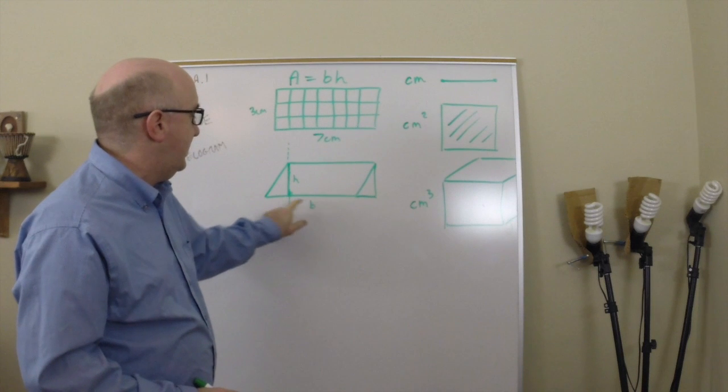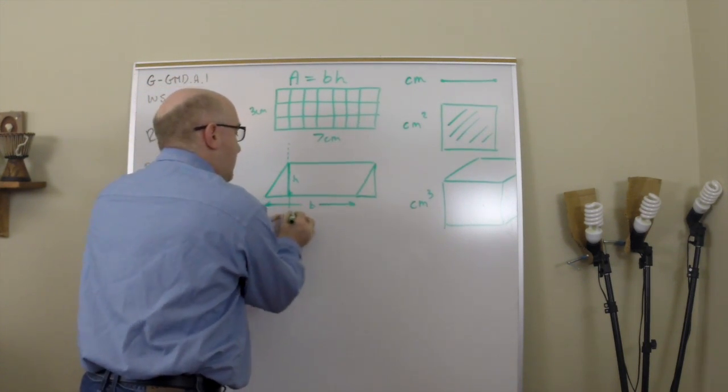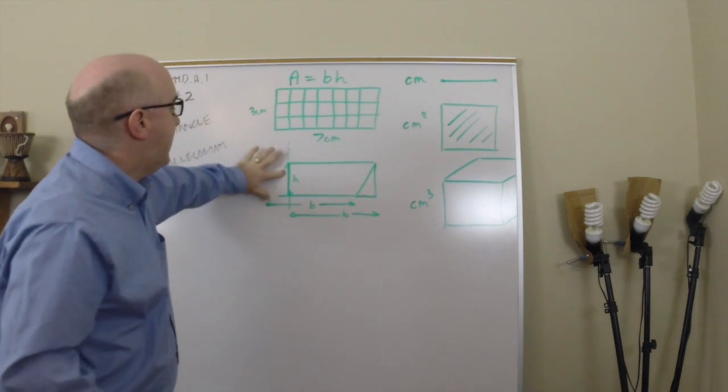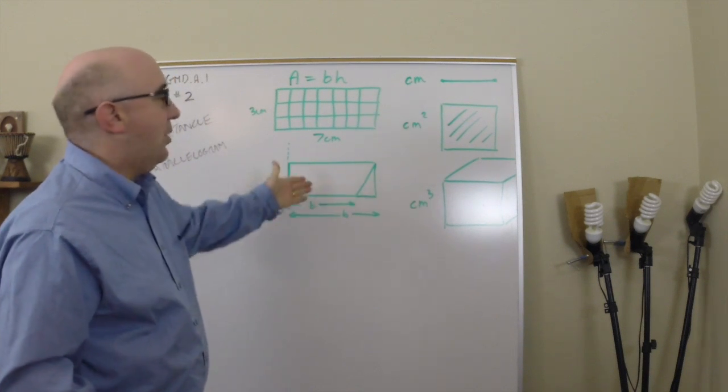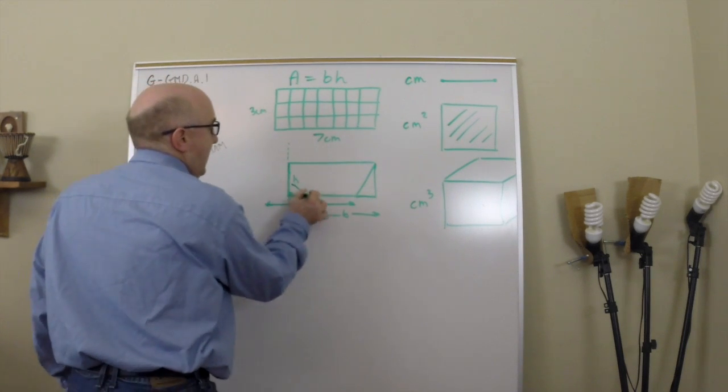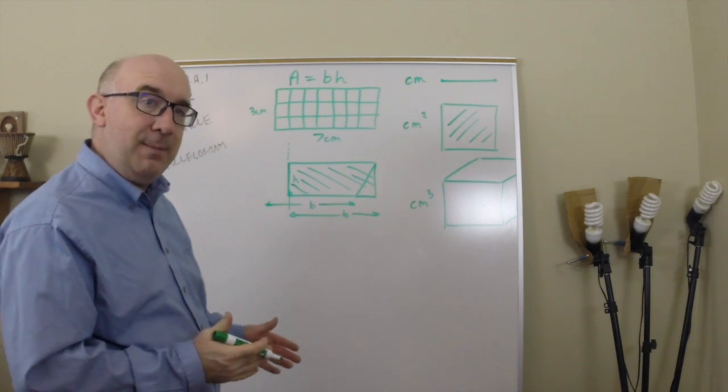So that base, the original base from here to here would now still be the base from here to here. Because I put it right back, but just in a different spot. Notice what's formed when we do that. We form a rectangle. A rectangle that has the same area as the parallelogram.